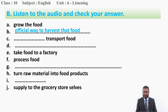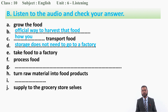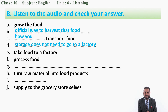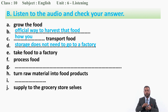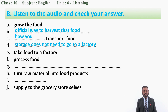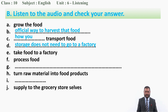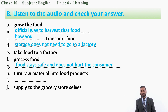For C, the answer is 'how to transport food.' For D, listen again: 'how do you transport that and store it, does it need to go to a factory?' — so D should be 'store it' or 'does it need to go to a factory.' While listening we have to be very careful to catch pieces of information.